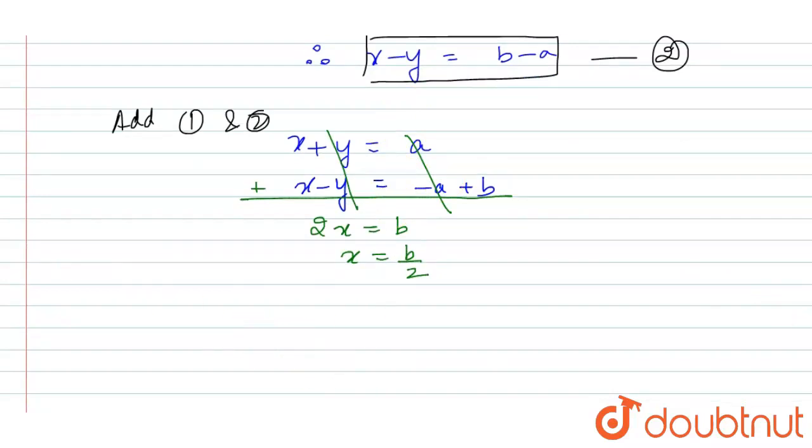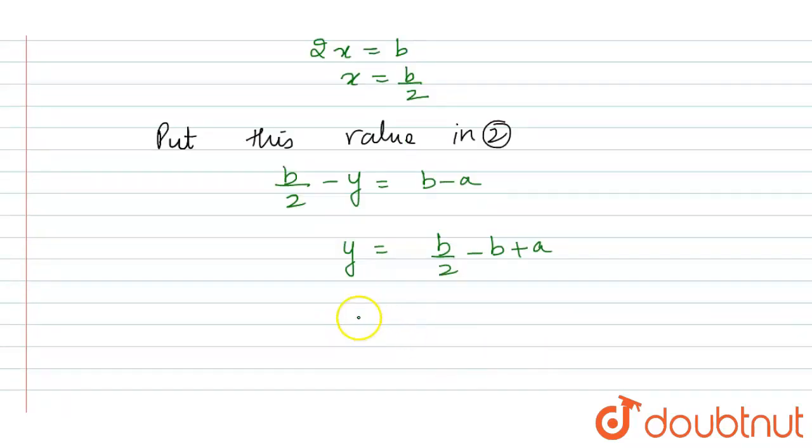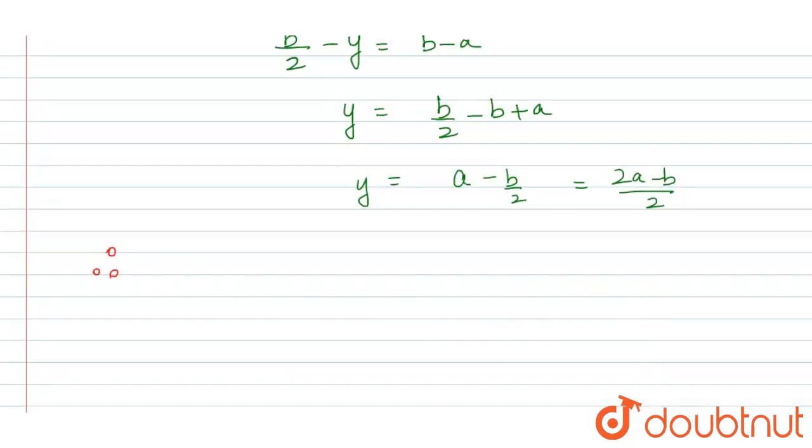Now let us put this value in the second equation. Put this value in second equation. We will get that x is b/2 minus y = b-a. So from here, the value of y is b/2 - b + a. That is, y = (a-b)/2 or (2a-b)/2. Therefore, now we are ready with our two values of x and y. Our final answer is x = b/2 and y = (2a-b)/2.